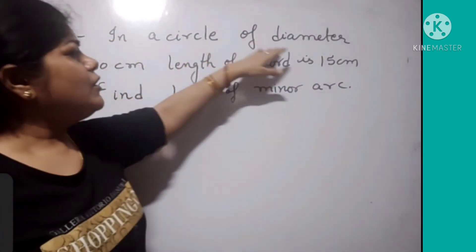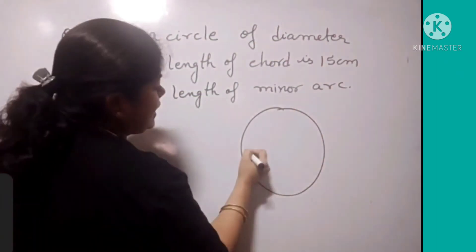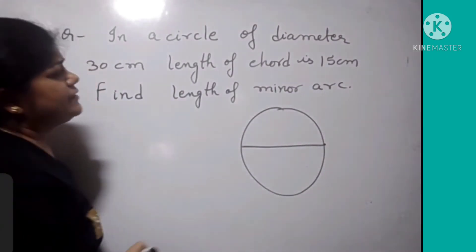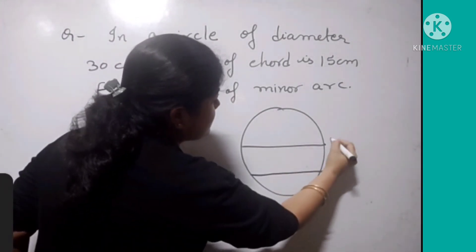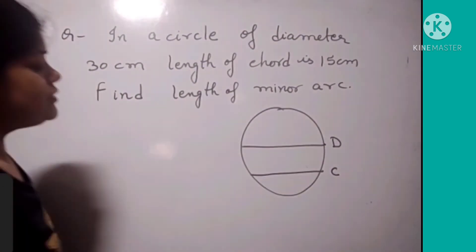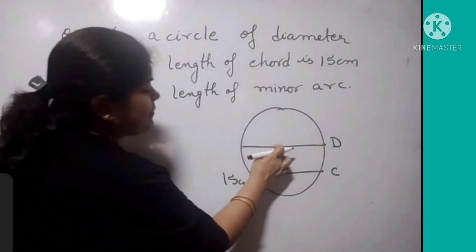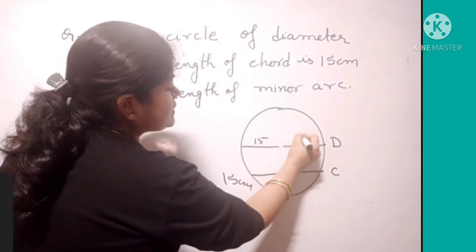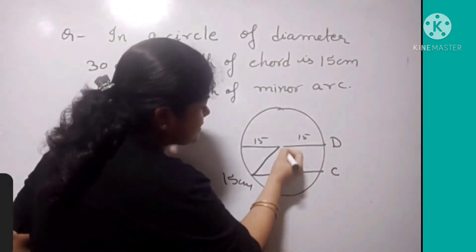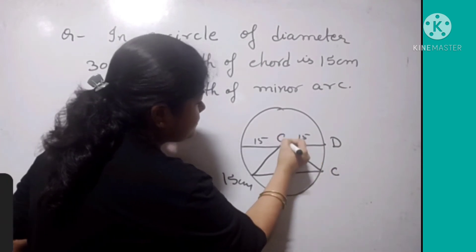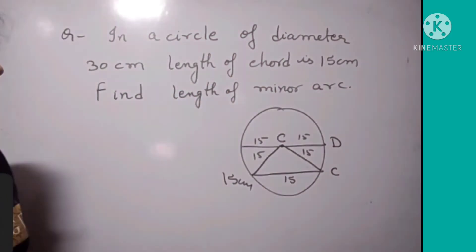We have another question. In a circle of diameter 30 cm, there is a chord. Length of chord is 15 cm. If this is the diameter, so the radius is 15 cm on each side. This is the center, so this radius is 15, this radius is also 15, and the chord length is also 15.